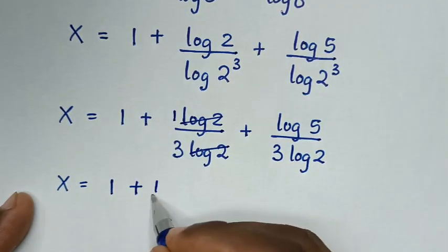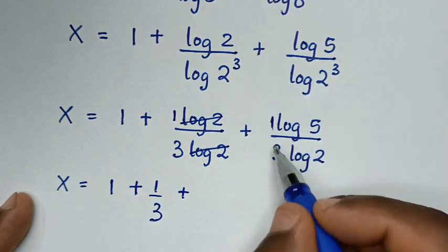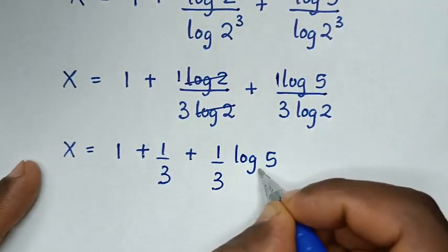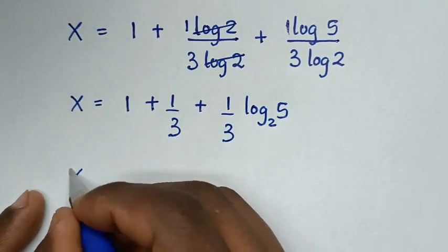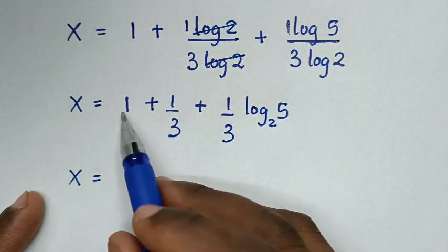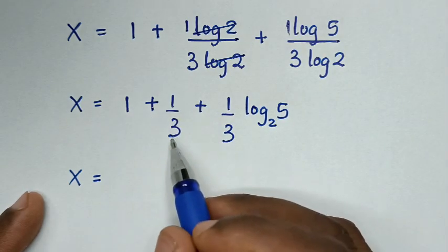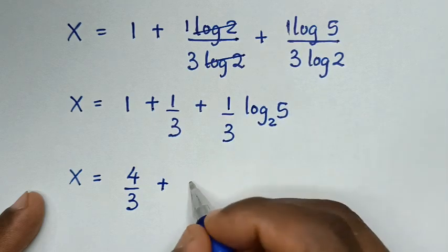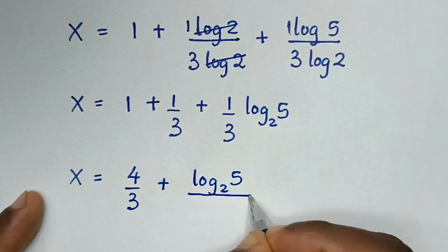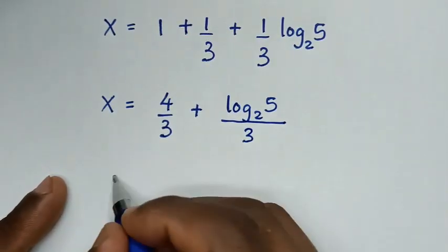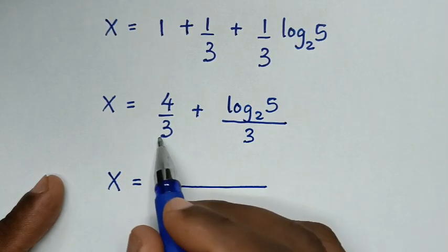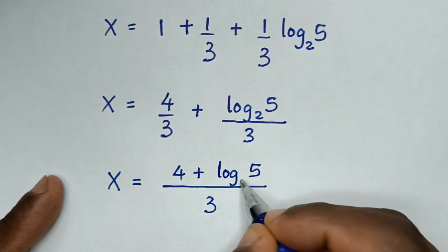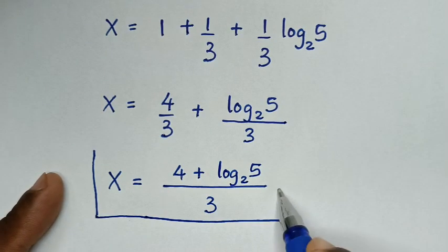So it will be x is equal to 1 plus — here to simplify log of 8, it will be 1 and 1 over 3. Now into improper fraction it will be 3 times 1 is 3 plus 1 is 4, so it will be 4 over 3, then plus 1 times log of 5 base of 2 — it will be log of 5 base of 2 — then over this 3. So it will be x is equal to 3, then 4 plus log of 5 base of 2 over 3. This is the final answer for the value of x.